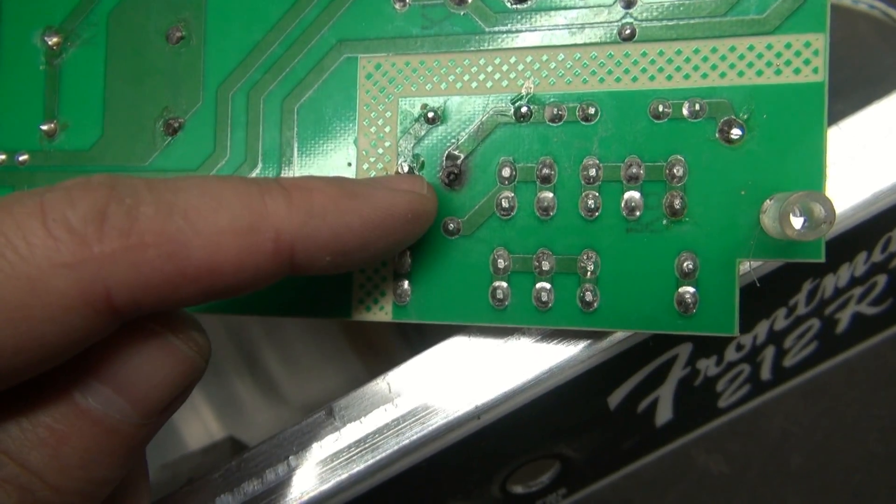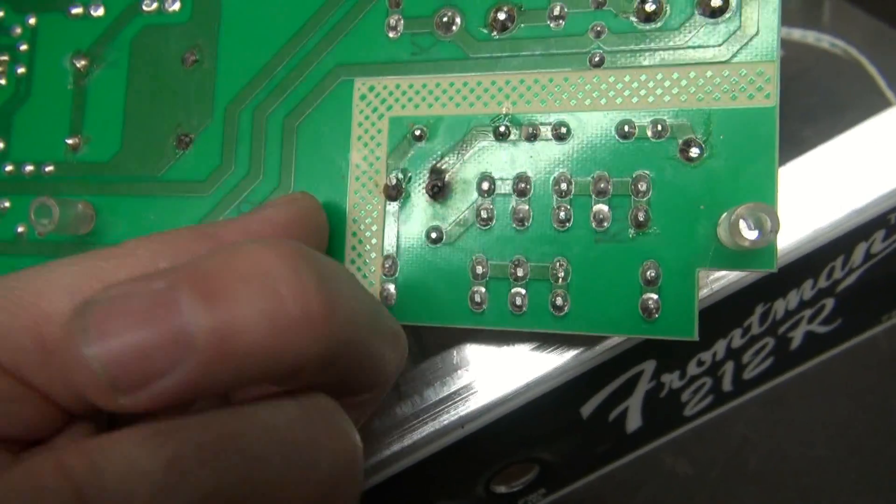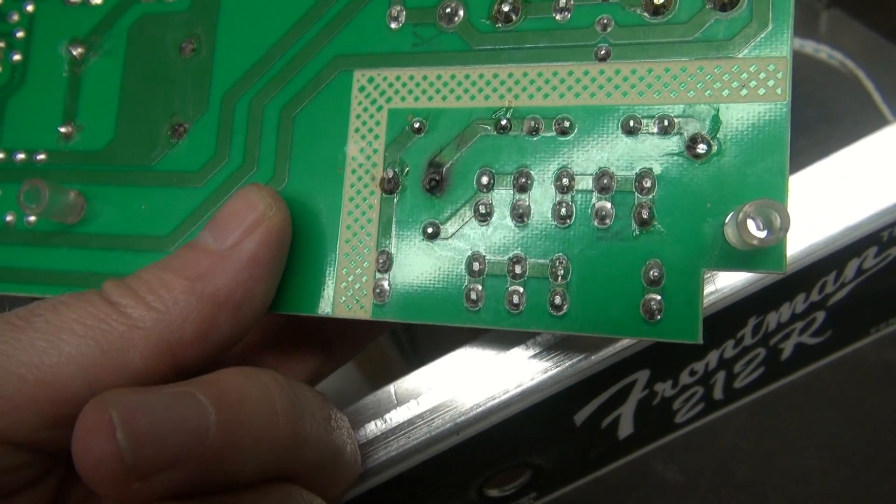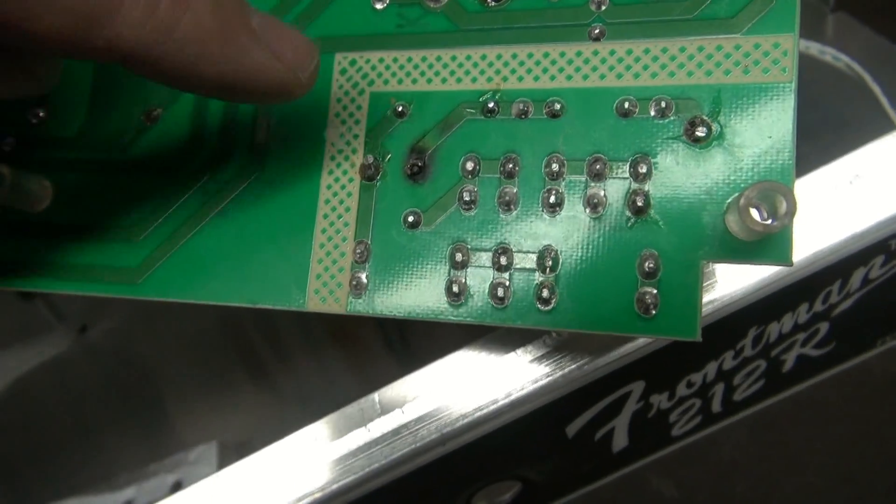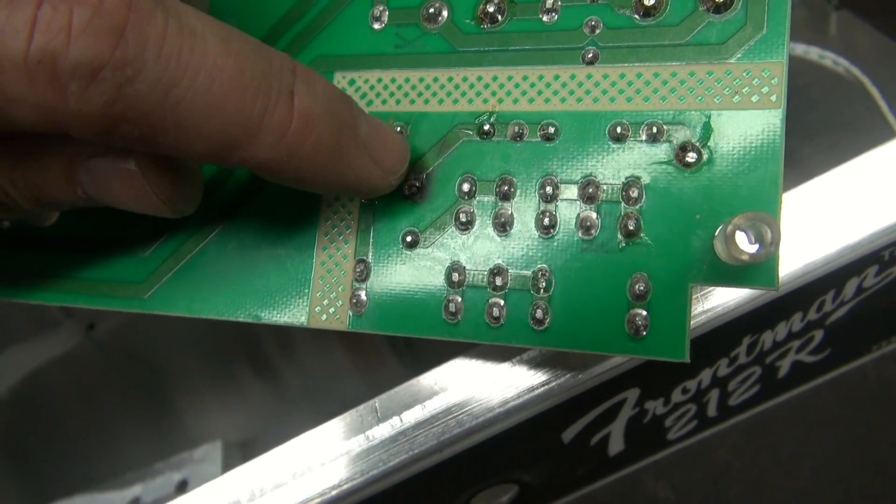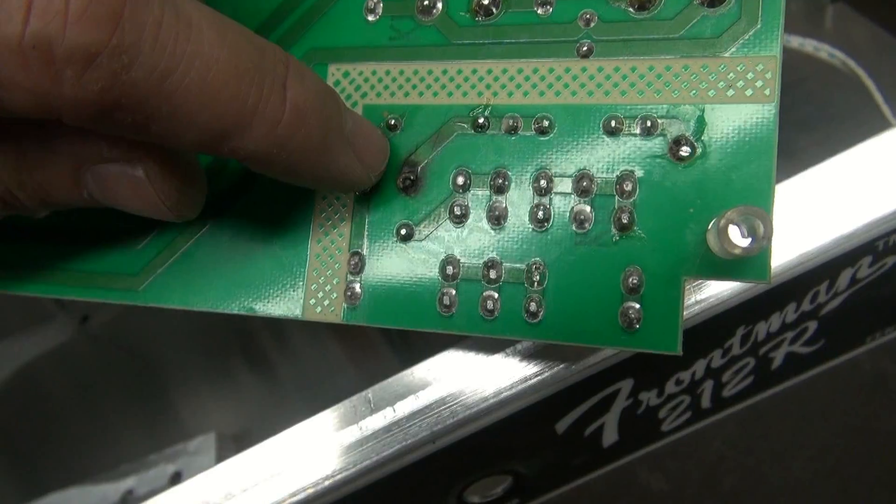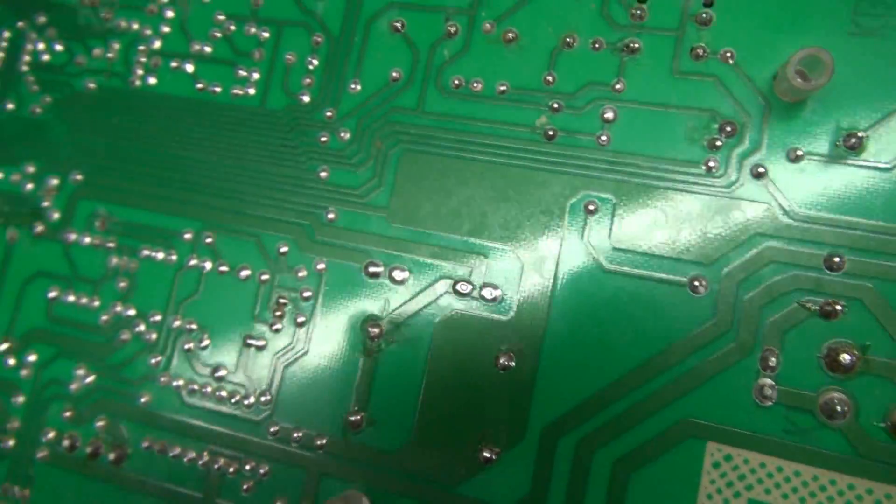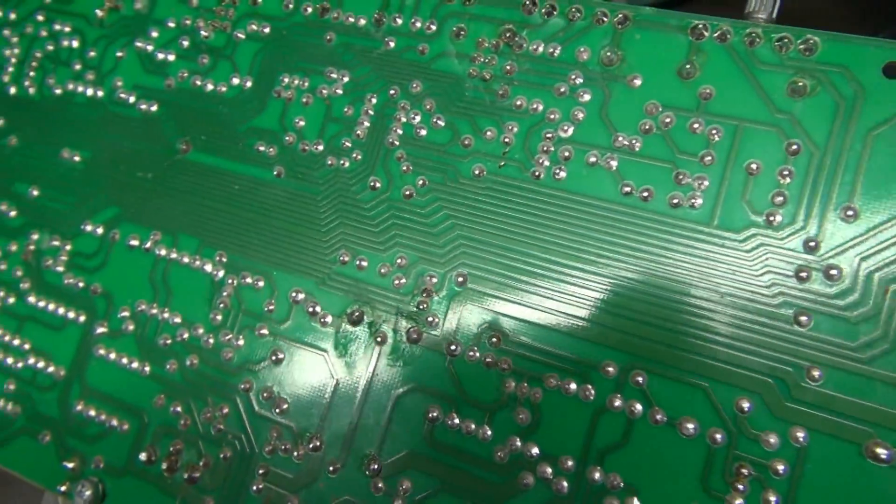So right here is the main culprit, that little thermistor I was showing you. You can see it moving around there. Unfortunately, the foil is damaged. So what I'm going to have to do is sand this back and put in some wire to strengthen the connection. Then we'll go over the board and fix up anything else I spot.